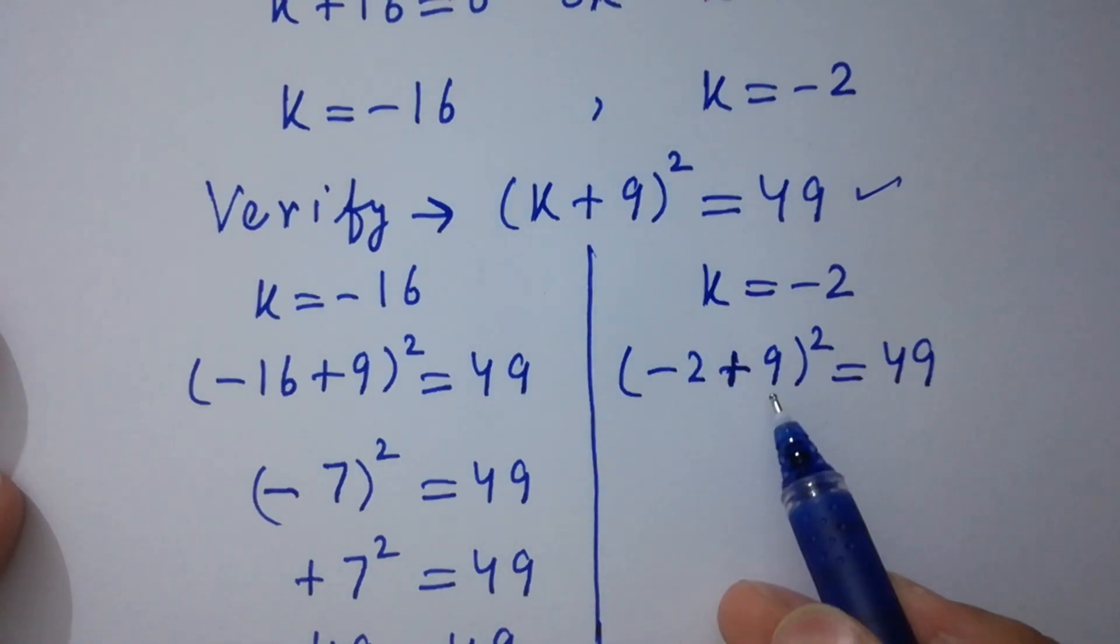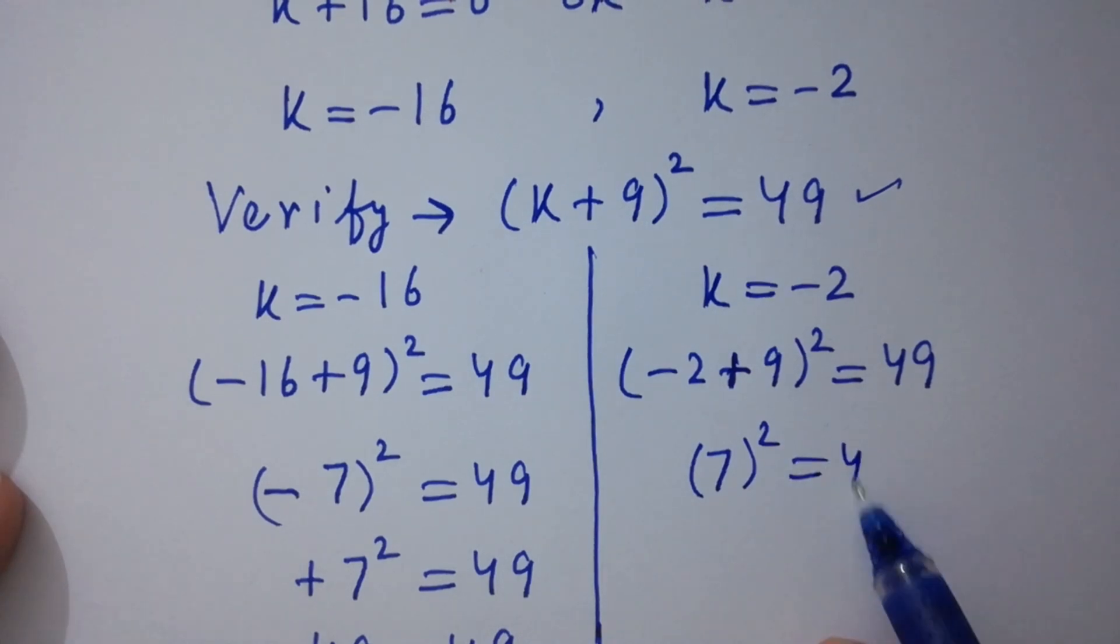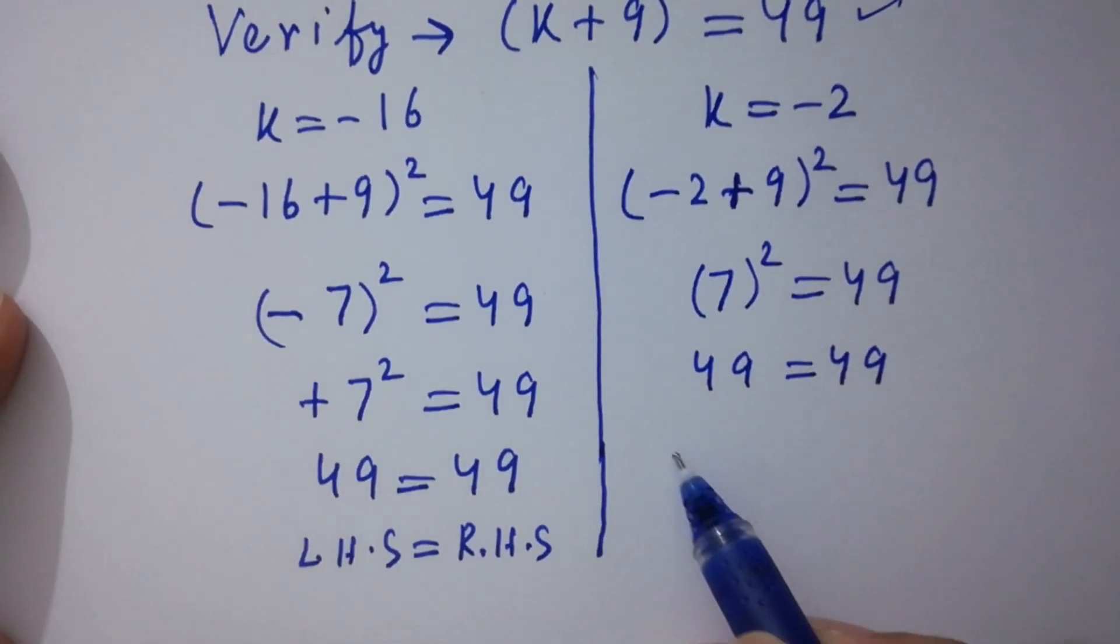We have here plus value of 9 - 2, we have 7² = 49. 7 times 7 is 49 equal to 49. Again, left-hand side.